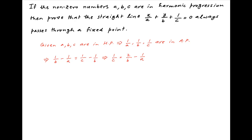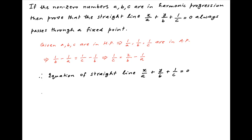Using this result, the equation of the straight line x/a + y/b + 1/c = 0 can be rewritten by substituting 1/c, giving us x/a + y/b + 2/b minus 1/a equals 0.